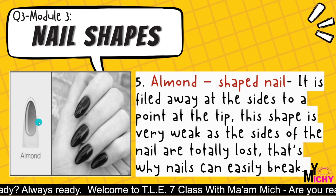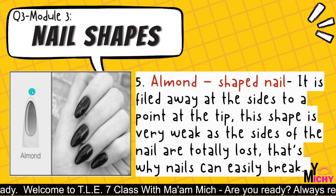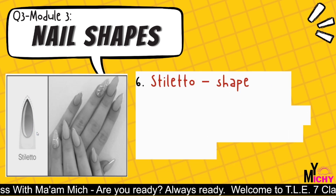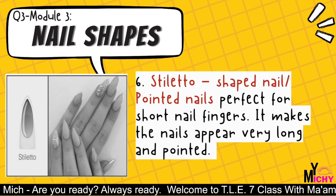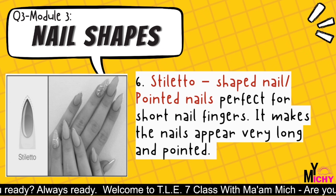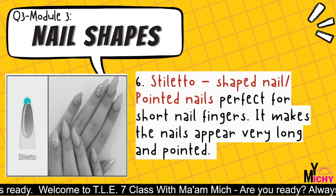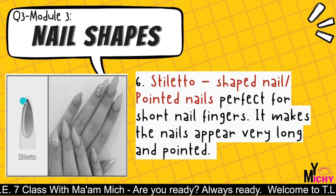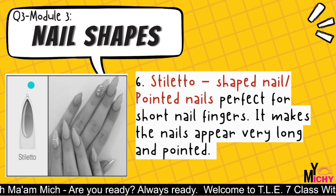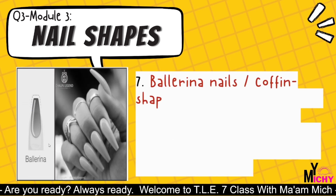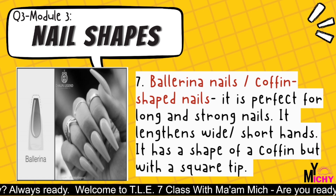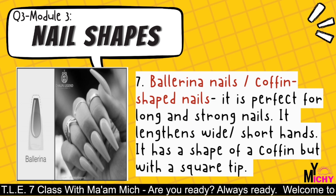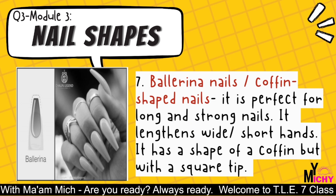The almond shape is filed on the sides using a nail file. Stiletto or pointed nails are perfect for short nail fingers — they make the nail appear very long and pointed with a very sharp tip. Ballerina nails or coffin-shape nails are perfect for long and strong nails; they lengthen wide or short hands and have the shape of a coffin with a square tip.